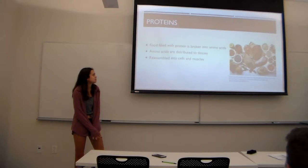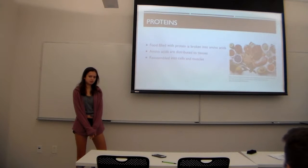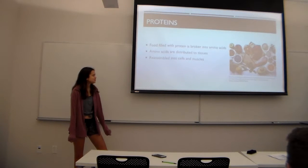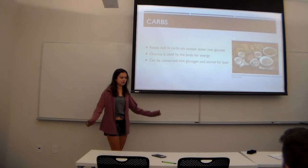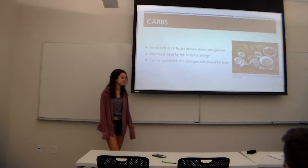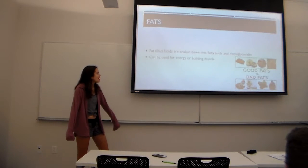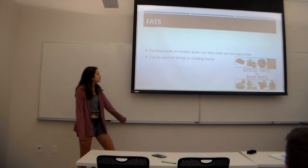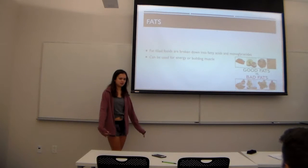Proteins break down into amino acids, which are distributed to the tissues — that's why when you're working out and breaking down muscles, you want to eat protein to help reassemble cells and muscles. Carbs are broken down into glucose, which the body uses for energy, which is why people carb-load before a run; excess glucose can be converted to glycogen and stored for later. Fats are broken down into fatty acids and monoglycerides, which can be used for energy or building muscle, depending on whether you eat healthy or unhealthy fats.